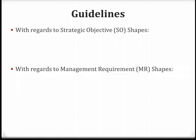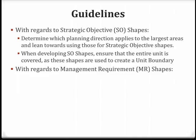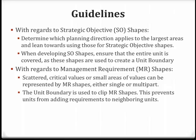With regards to strategic objective shapes, determine which planning direction applies to the largest areas and lean towards using those for strategic objective shapes. When developing strategic objective shapes, ensure that the entire unit is covered, as these shapes are used to create a unit boundary. Remember that strategic objectives do not overlap. With regards to management requirement shapes, scattered critical values or small areas of values can be represented by management requirement shapes, either single or multi-part. The unit boundary is used to clip management requirement shapes, which prevents units from accidentally adding requirements to neighboring units.